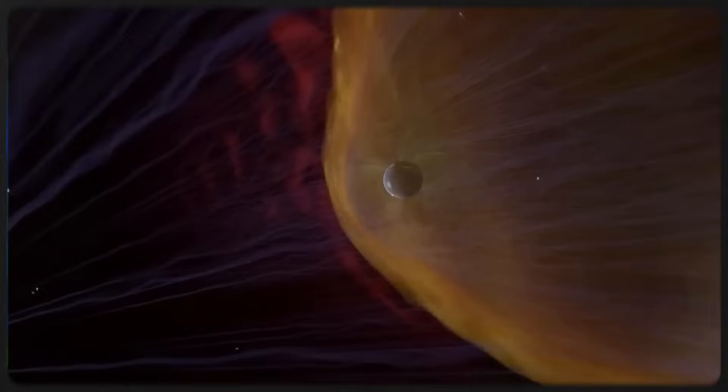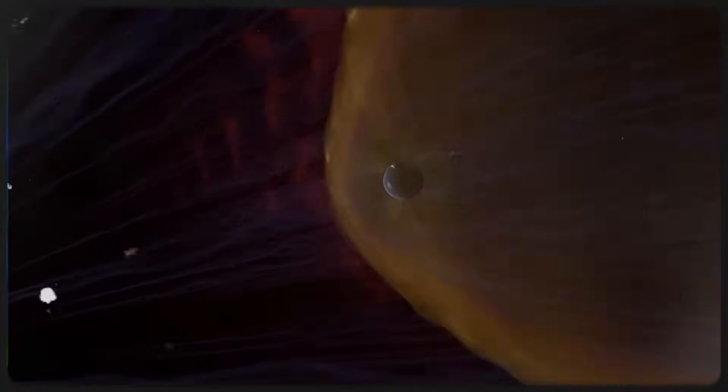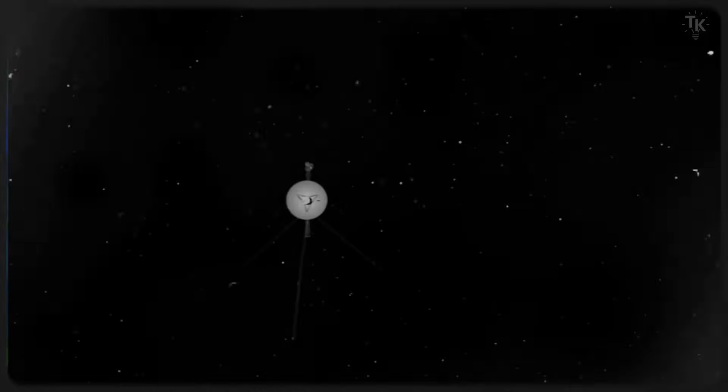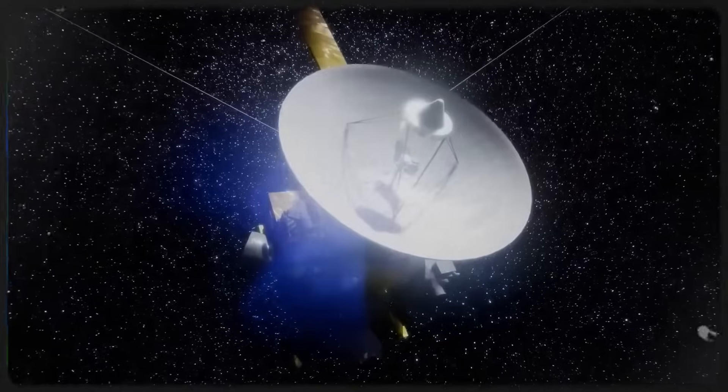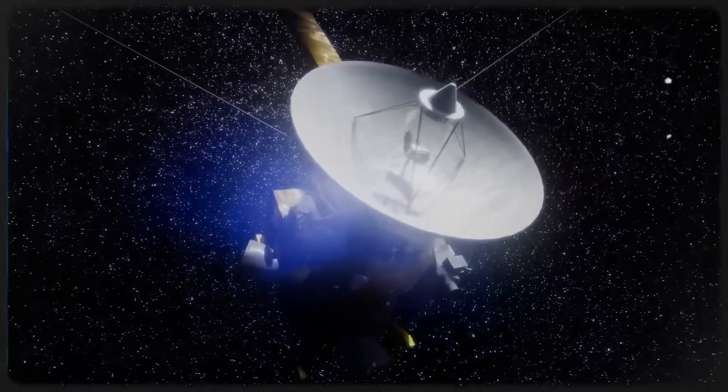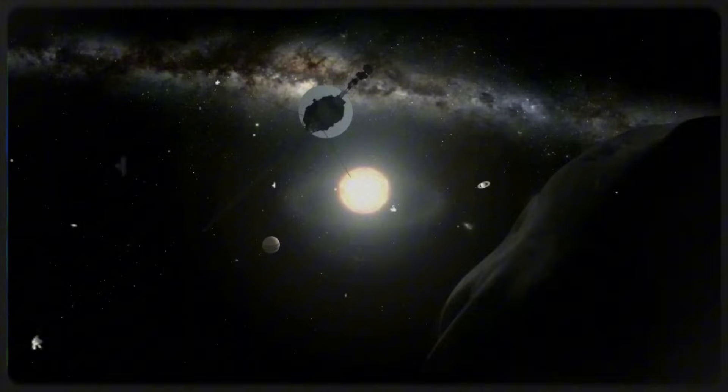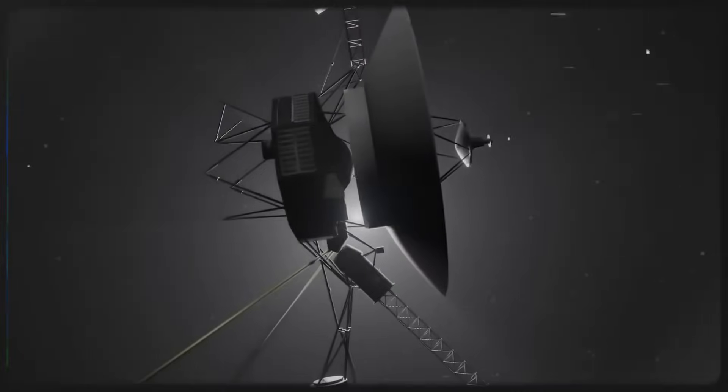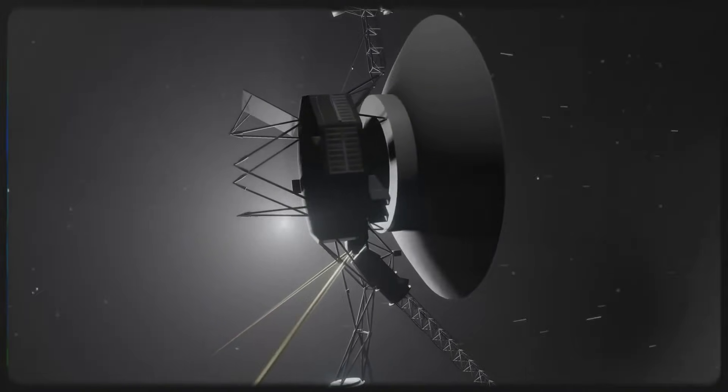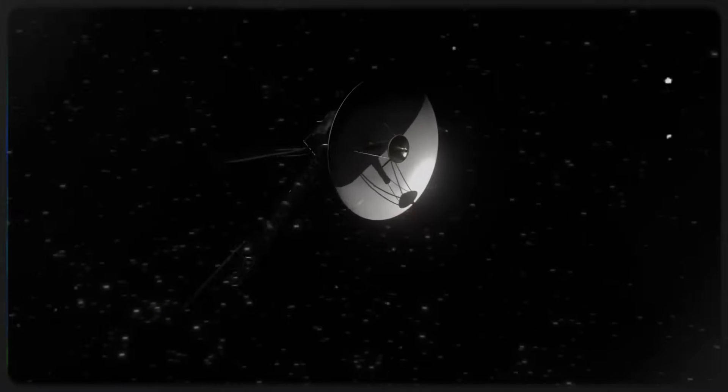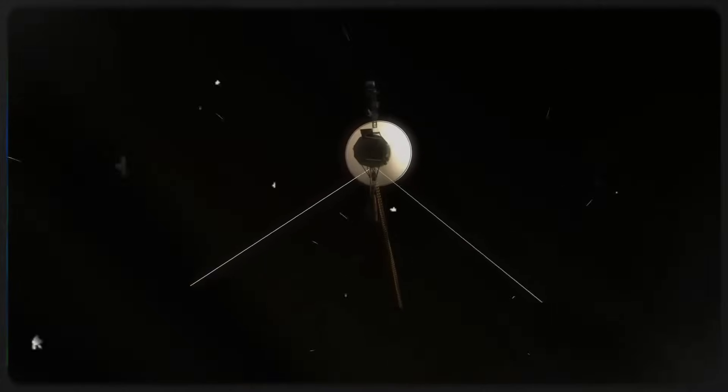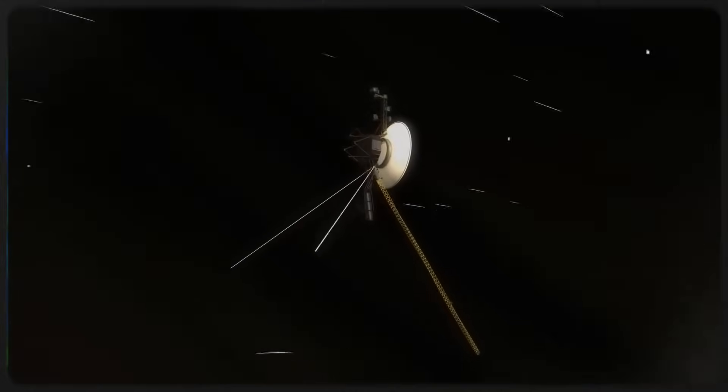Voyager 1 was never meant to go this far. It was launched with 1970s technology, powered by less computing power than a digital watch, and aimed at planets we thought we understood. But now, 45 years later, it's sending back data that is forcing Nobel Prize-winning scientists to rethink the very nature of the universe. A pulse that behaves like a signal, a shape hidden in magnetic noise, spatial glitches that suggest multiple realities, and a journey that now seems less like an escape from our solar system and more like an encounter with something else. Something ancient, something beyond physics, something watching. The spacecraft meant to be our ambassador to the stars may have found the edge of reality, or worse, something on the other side of it.